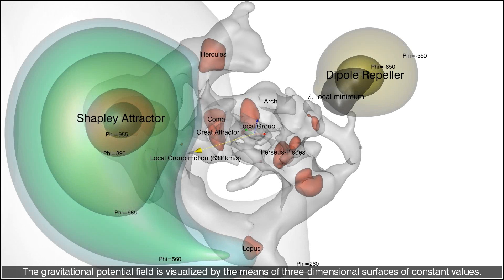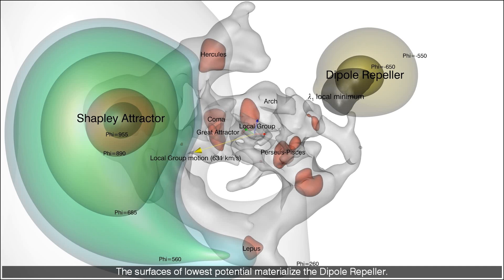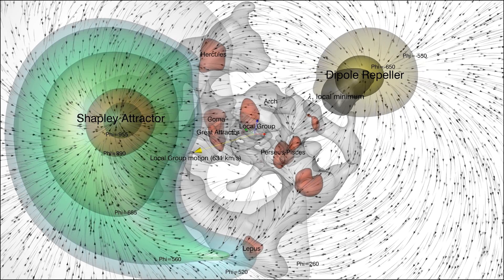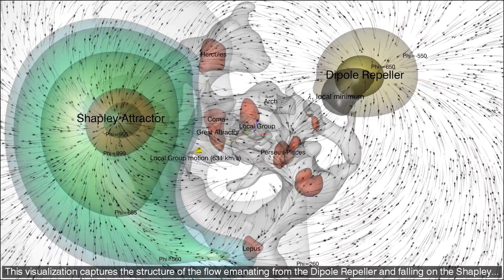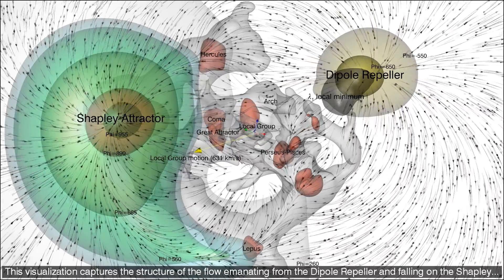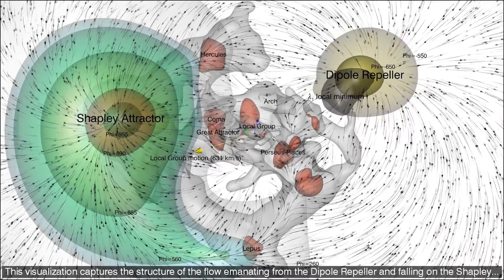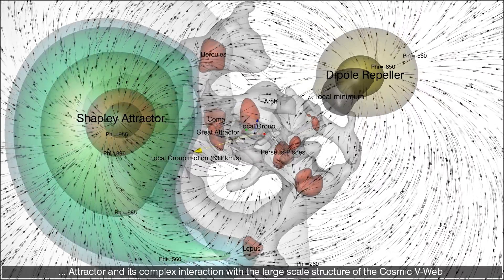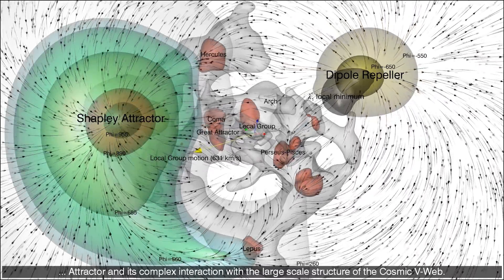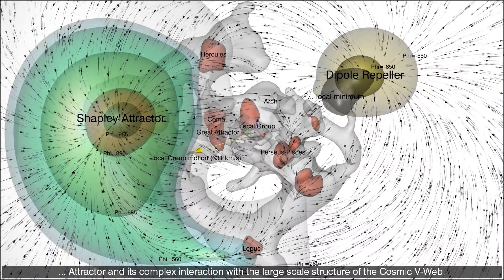The gravitational potential field is visualized by means of three dimensional surfaces of constant values. The surfaces of lowest potential materialize the dipole repeller. Surfaces of highest potential materialize the Shapley attractor. This visualization captures the structure of the flow emanating from the dipole repeller and falling on the Shapley attractor, and its complex interaction with the large-scale structure of the cosmic web.